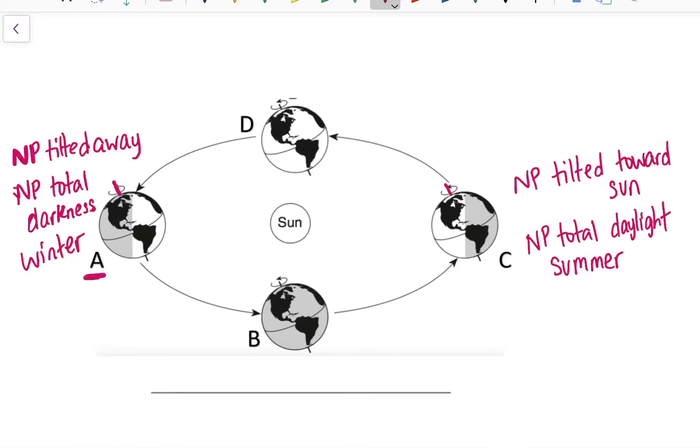So I can see on my diagram that my arrows are moving counterclockwise. So if position A is winter and position C is summer, in between winter and summer is spring. So position B must be spring.